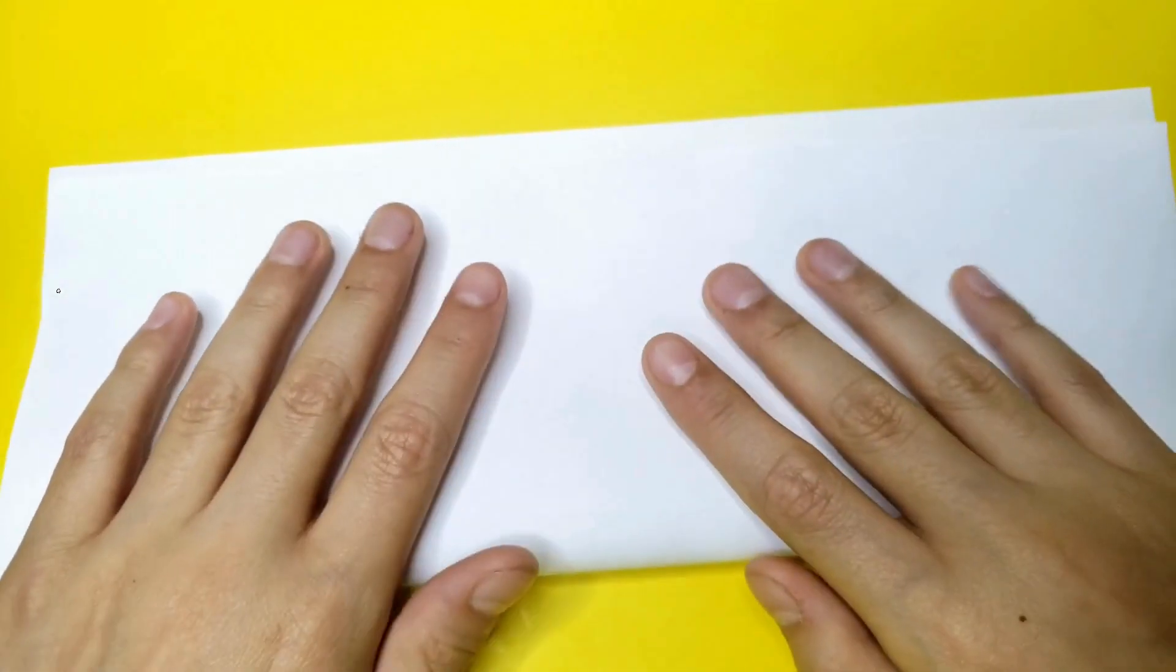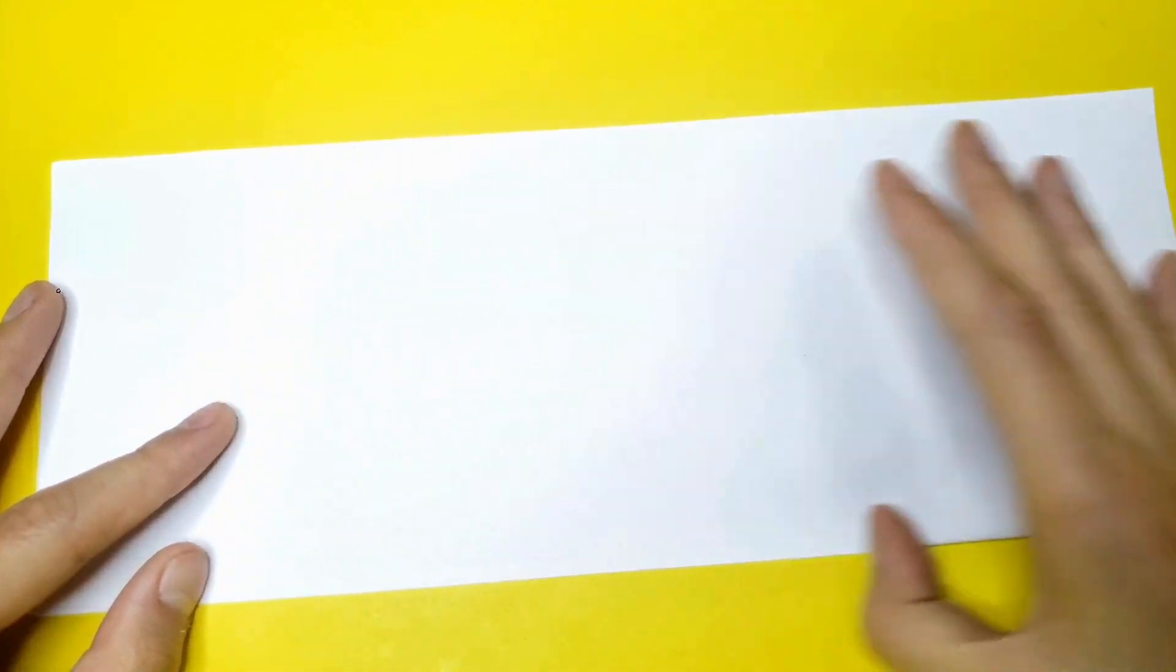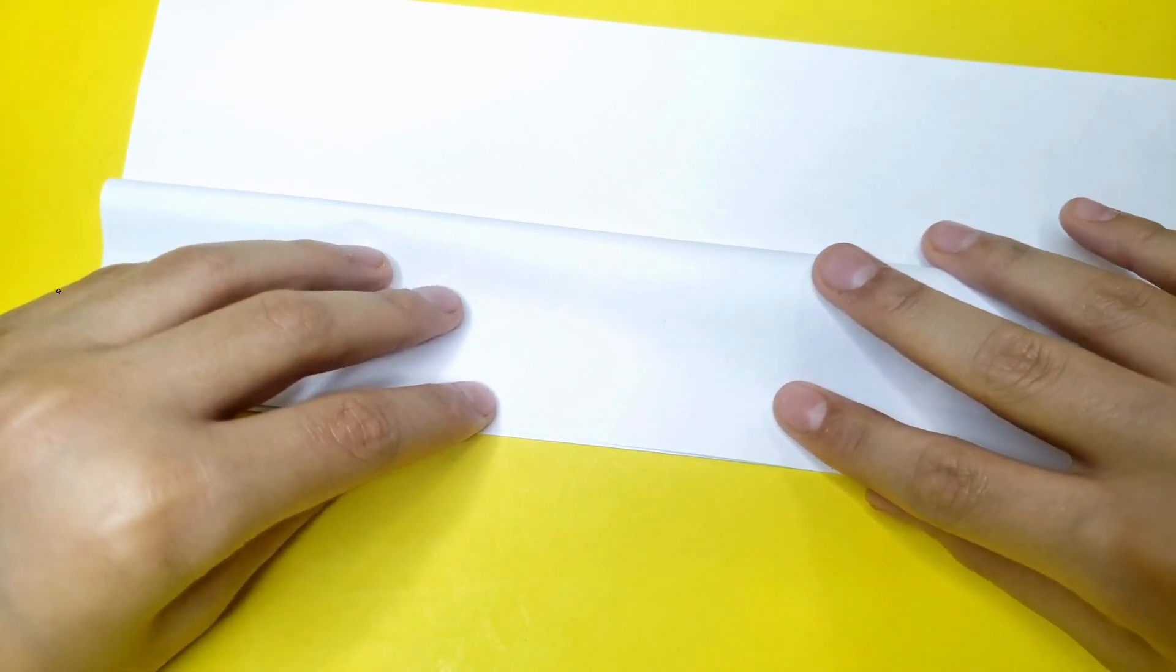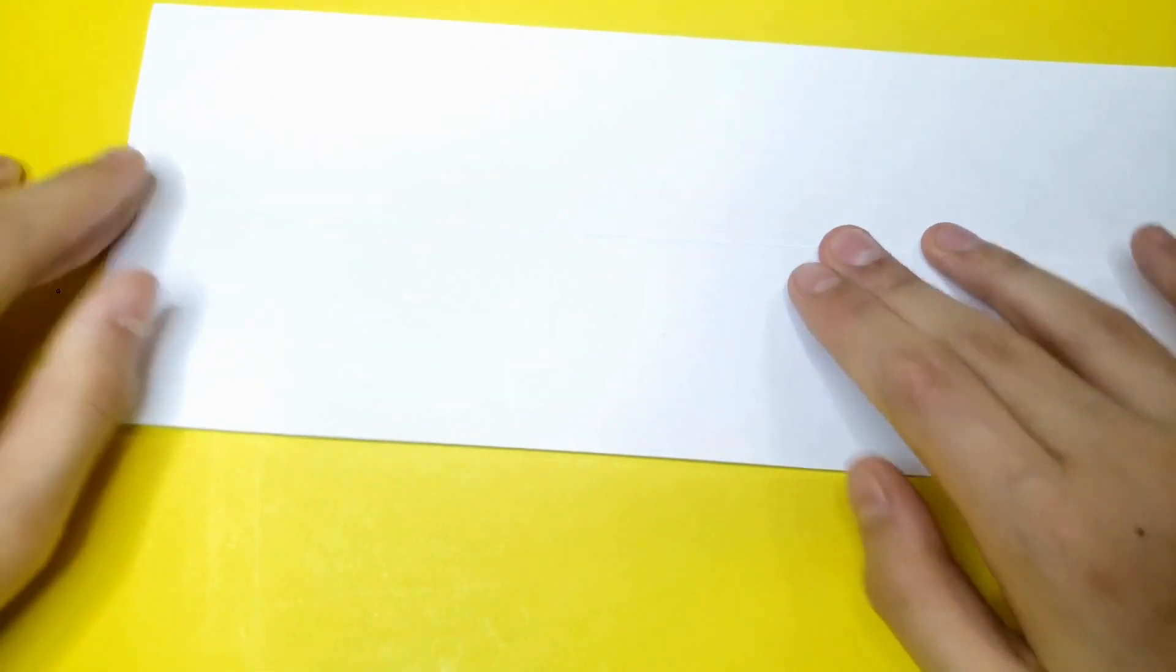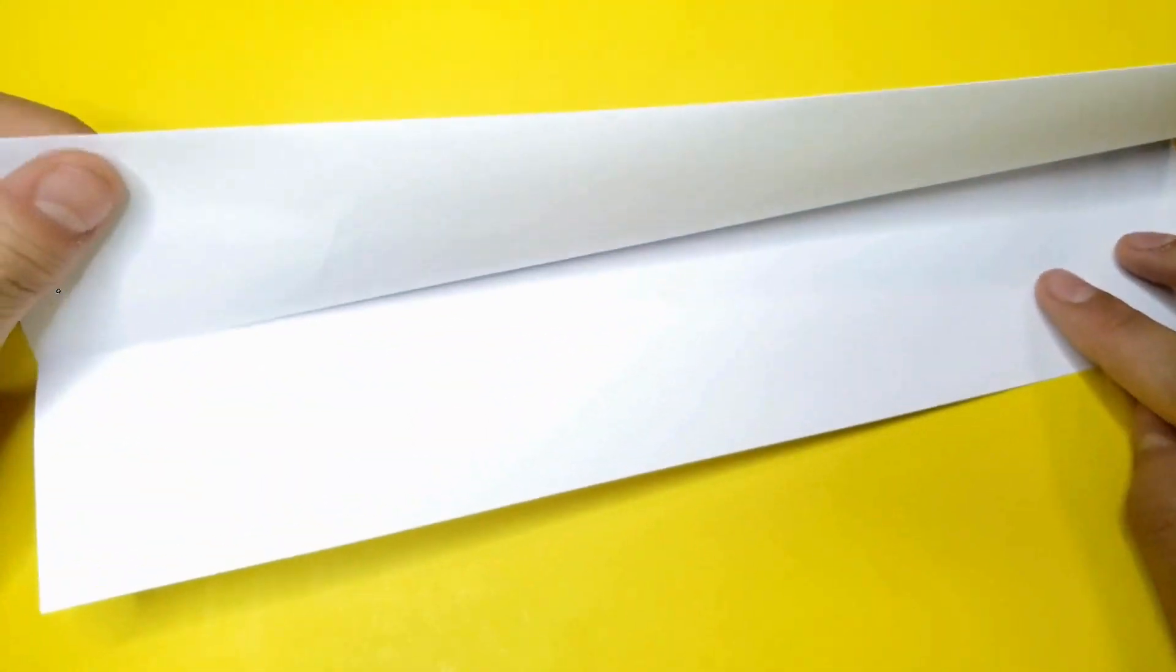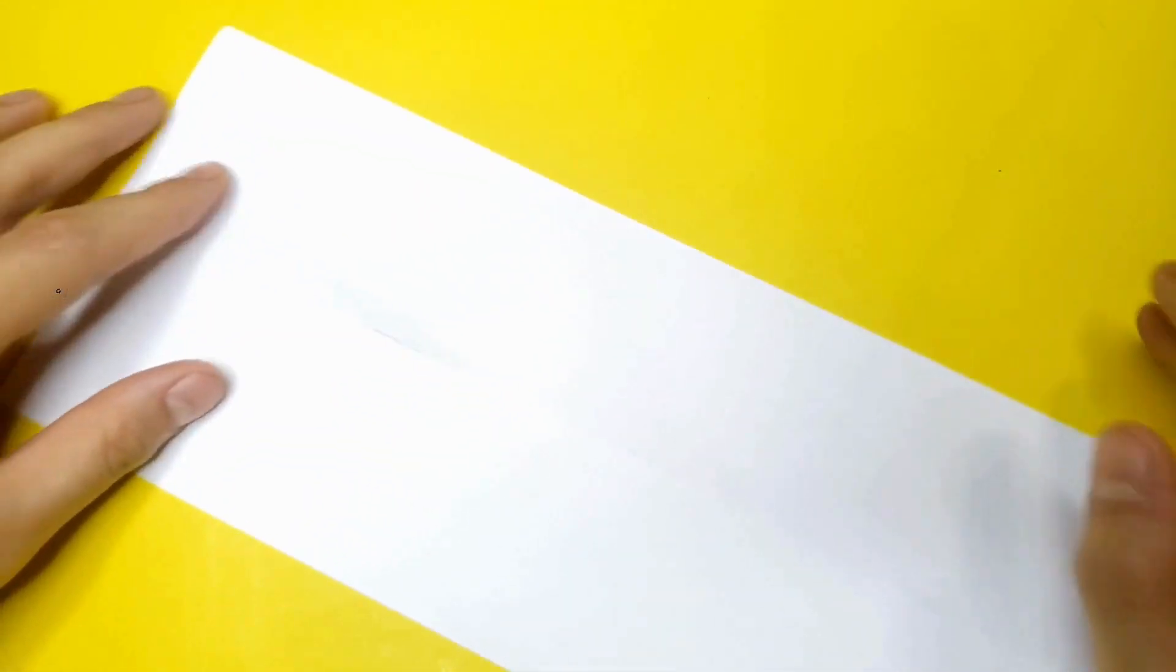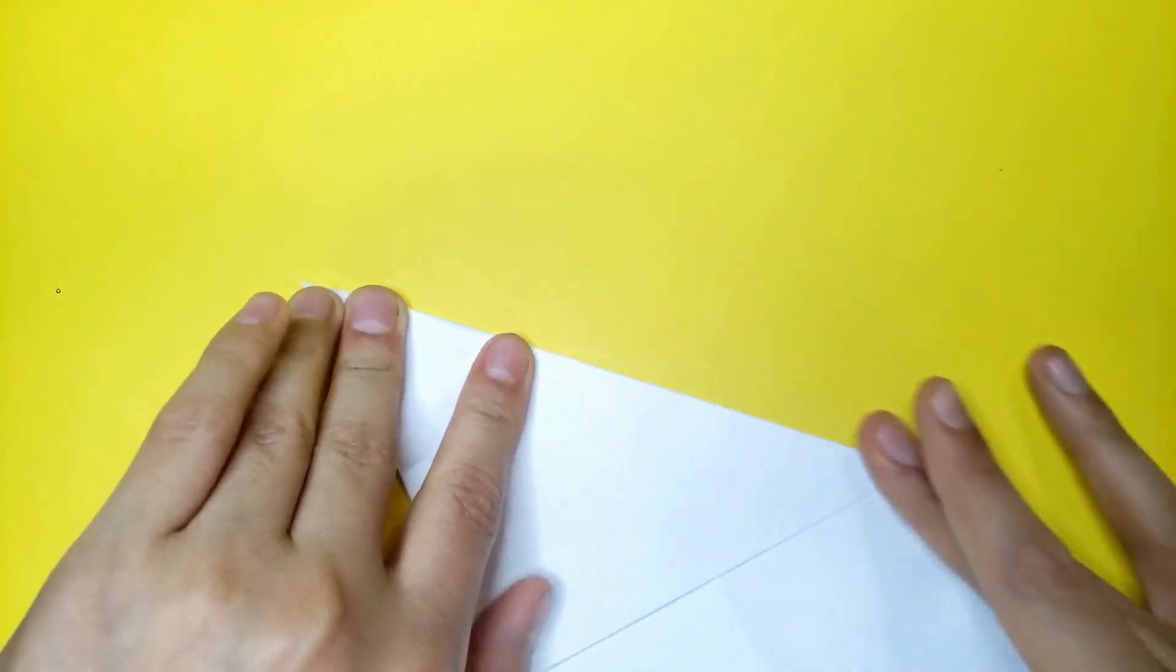You're going to need a rectangle piece of paper. Fold it in half, then fold this down. Now unfold this so it's a small rectangle, and fold this diagonally across.